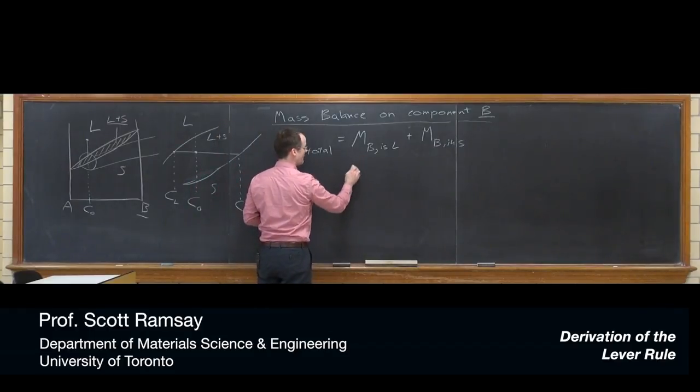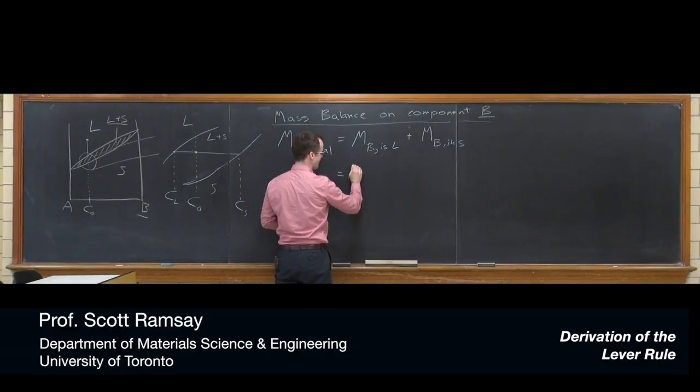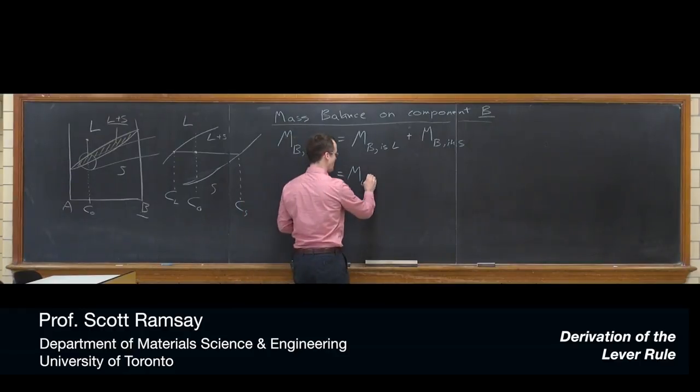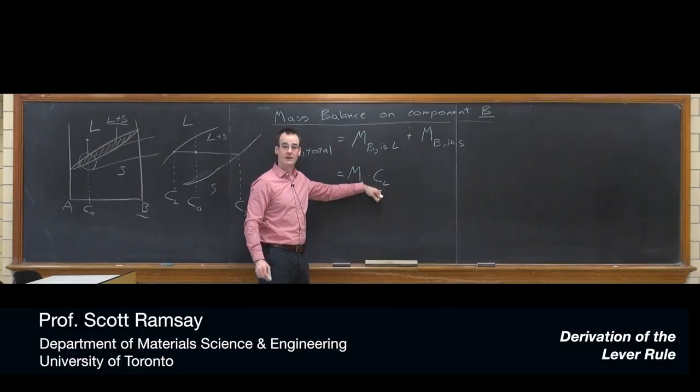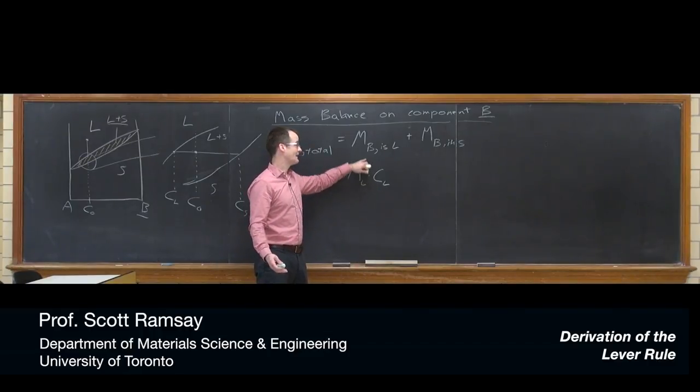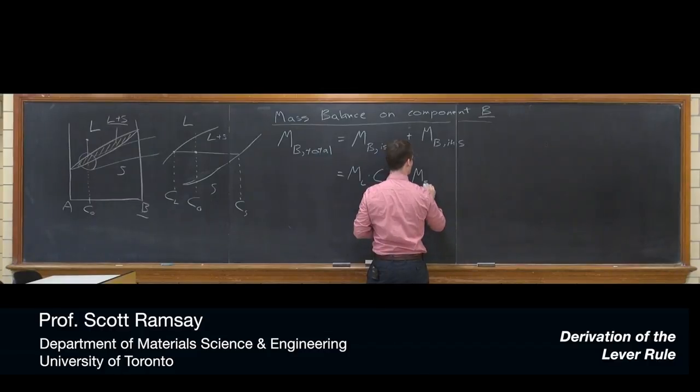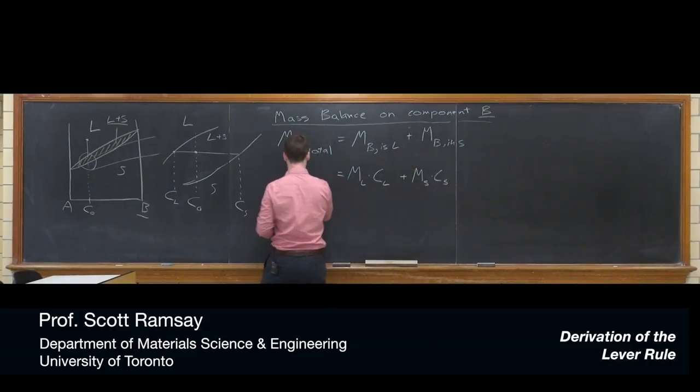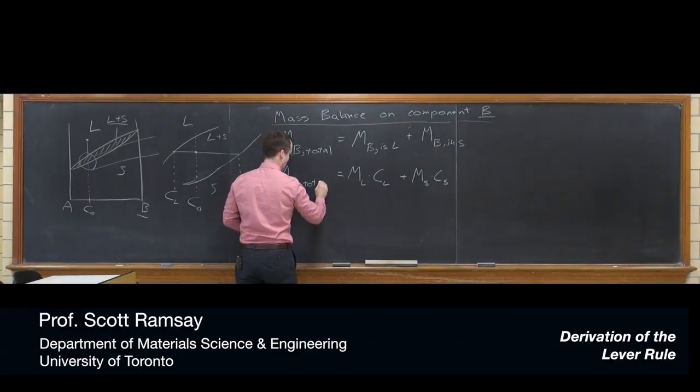So how can we determine the mass of B in the liquid? Well, if we knew the mass of the liquid and we multiplied by the composition of the liquid, that would actually provide the mass of B in the liquid. Because by convention, the composition is expressed in weight percent of the component on the right. In this case, weight percent B. So if we multiply the mass of one phase by the composition of that phase in weight percent B, it's going to give us how much B there is existing in that phase. And again, we can do the same thing over here, mass of the solid times the composition of the solid.